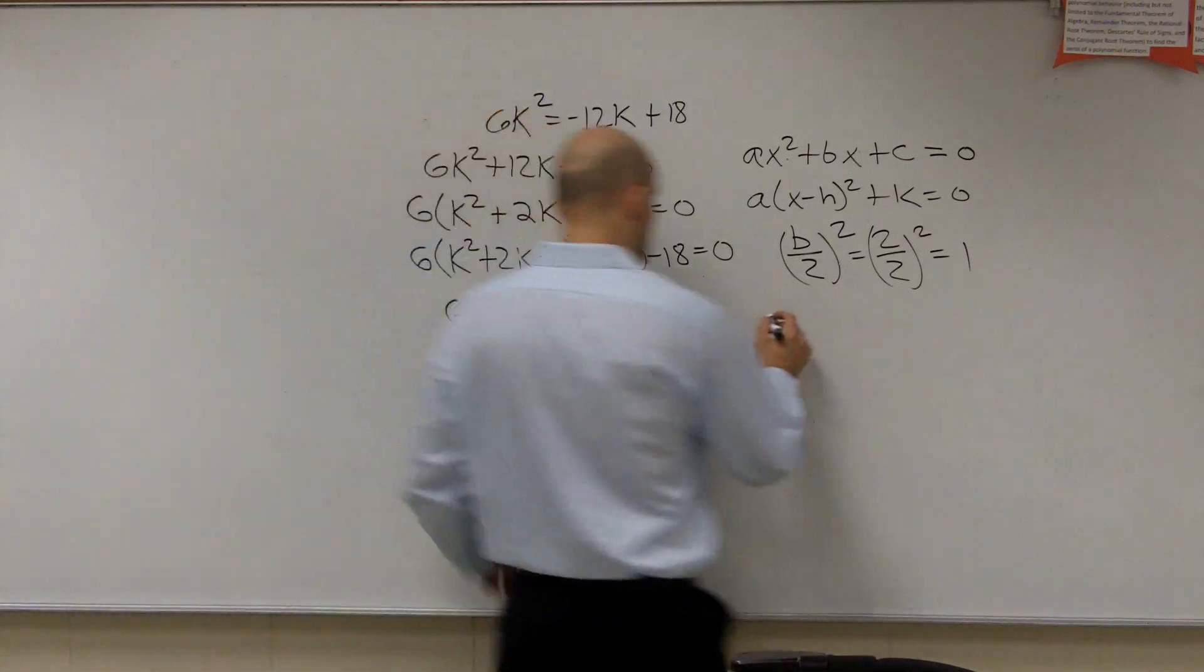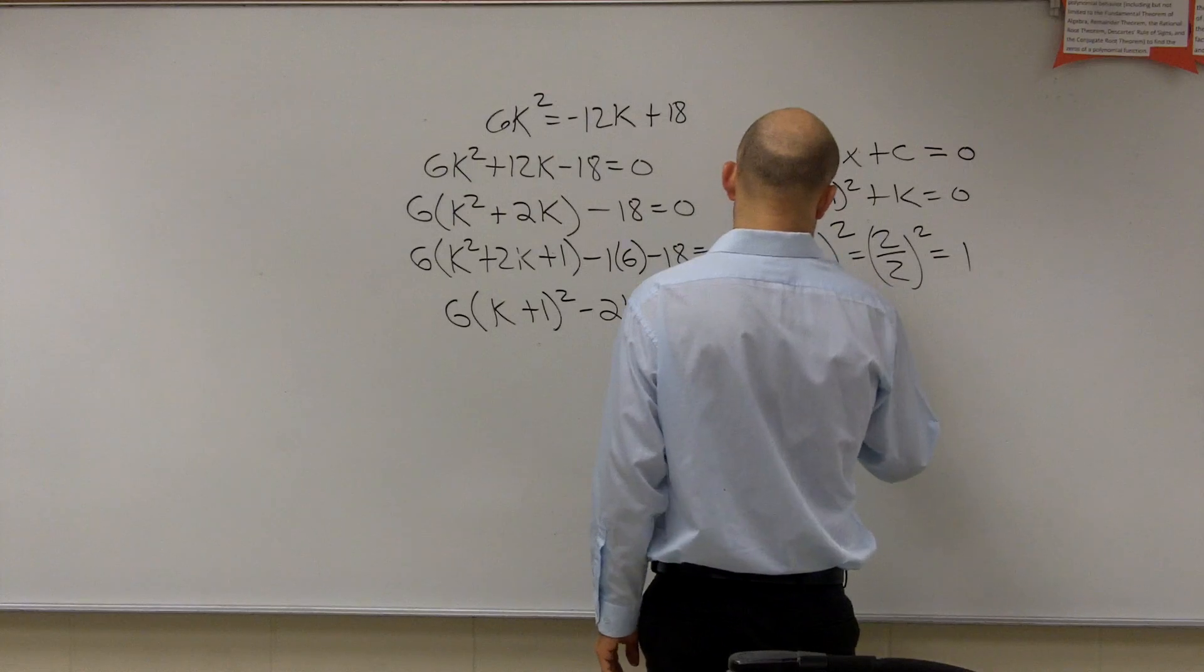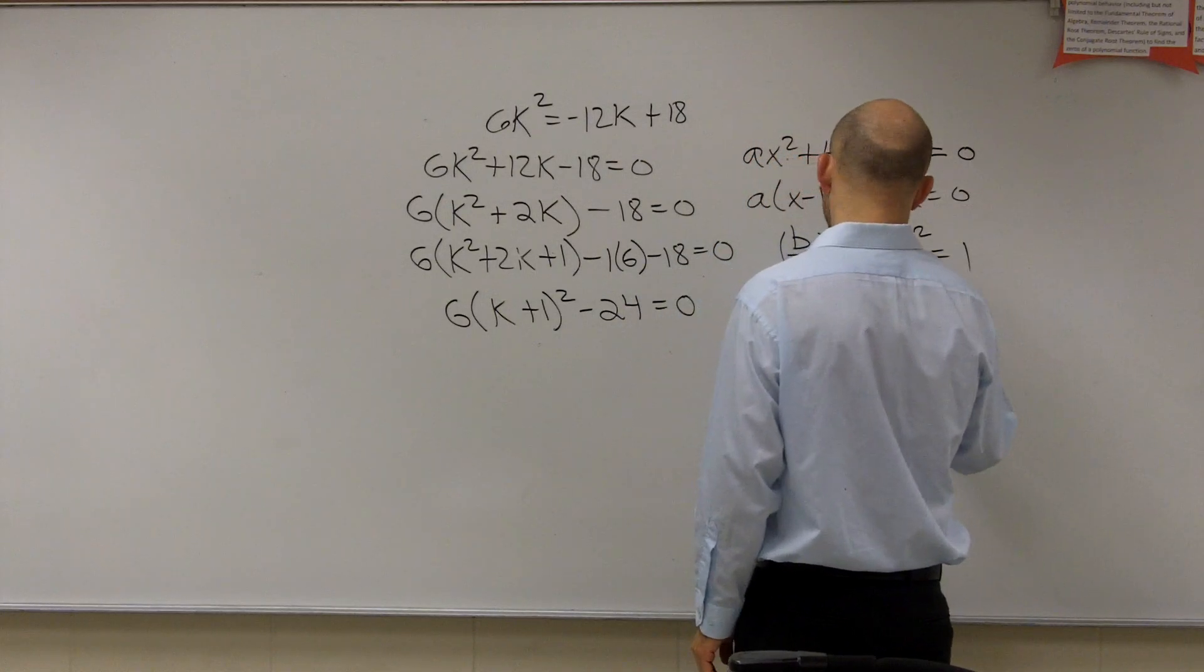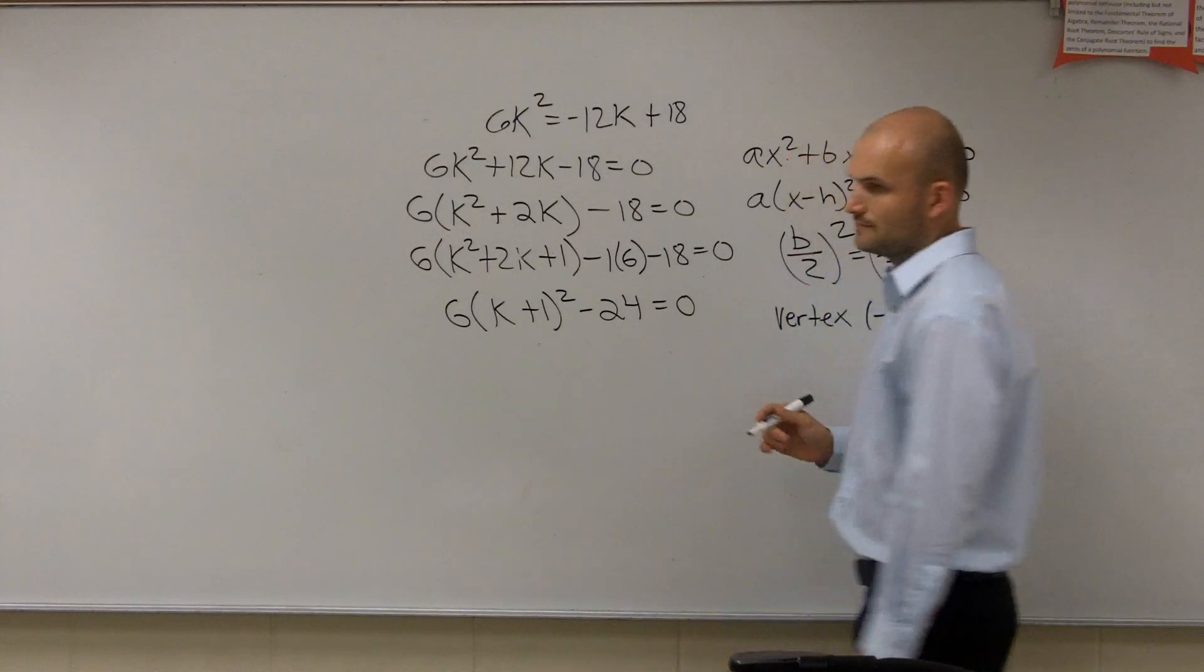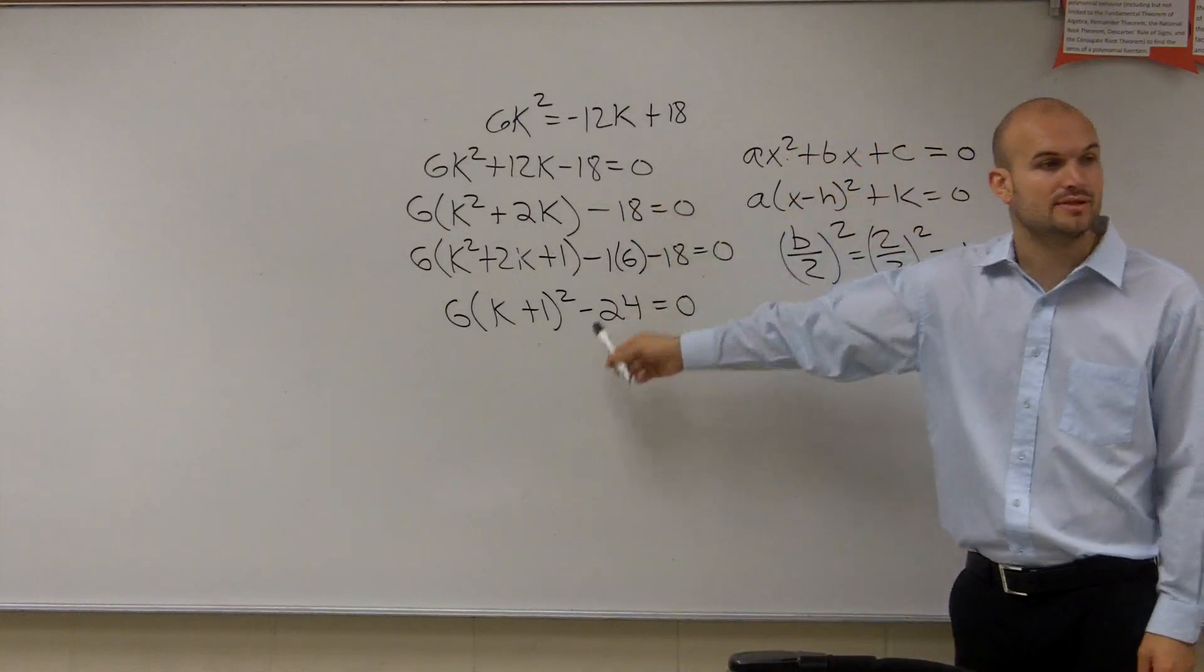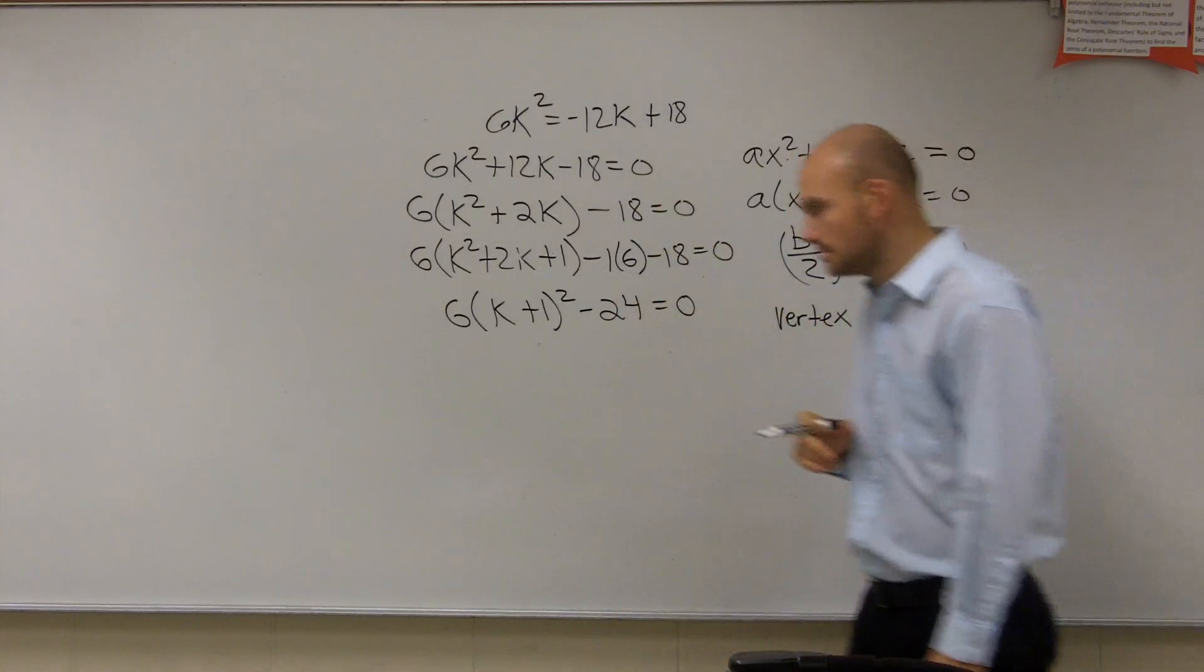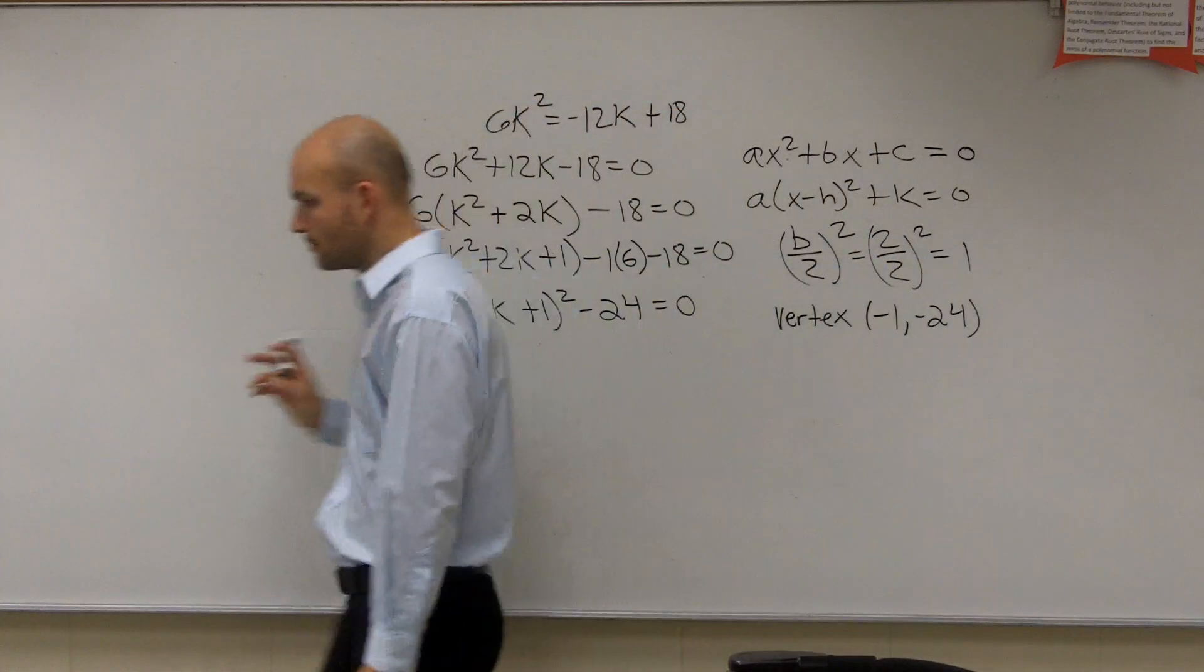So now, ladies and gentlemen, we've found the vertex, which is opposite h, which is negative 1, comma, negative 24. That's why it's so important to complete the square and put it into this format.